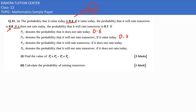Now what is p3? The situation says: if it does not rain today, the probability that it will rain tomorrow is 0.7. So p3 is 0.7. And p4 denotes the probability that it will not rain tomorrow if it does not rain today — so 1 minus 0.7 gives you 0.3.